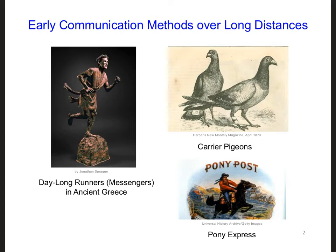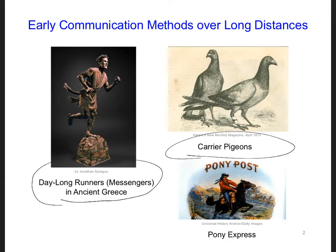Over many millennia, information could really only be sent over long distances by transporting messages between locations by people on foot, like the 25 mile run completed according to legend by Pheidippides to announce the defeat of the Persians to the anxious Athenians, or messages transported by carrier pigeons. You can see two ways of attaching the messages to the pigeons in this image, and also messages transported by people riding horses, like the Pony Express here in the United States.